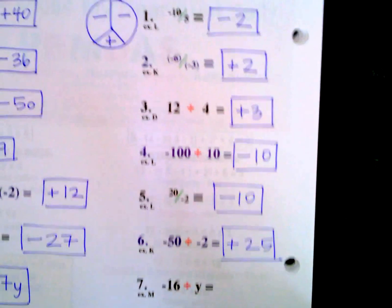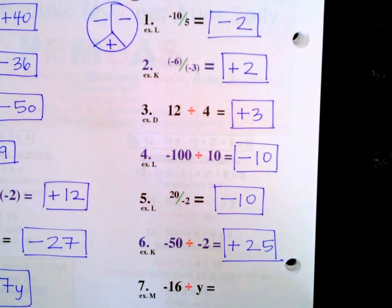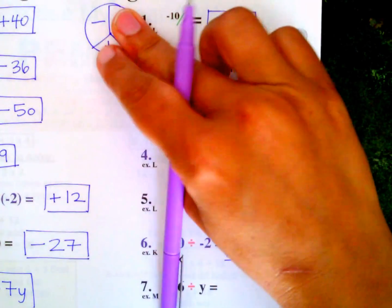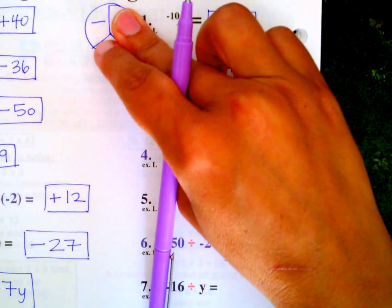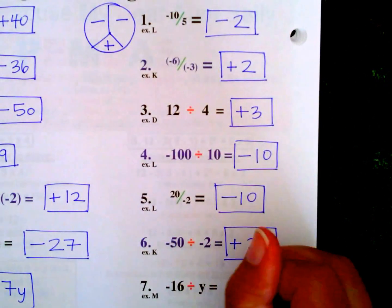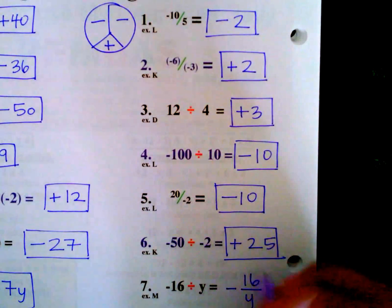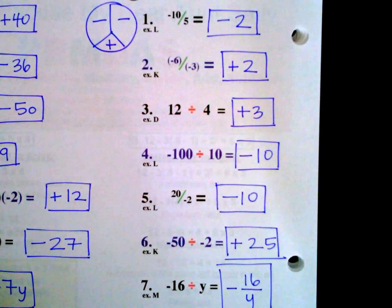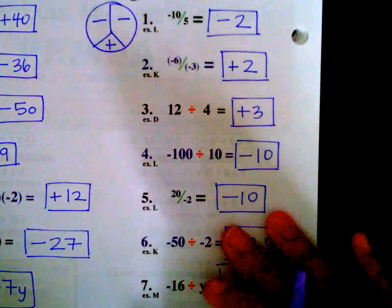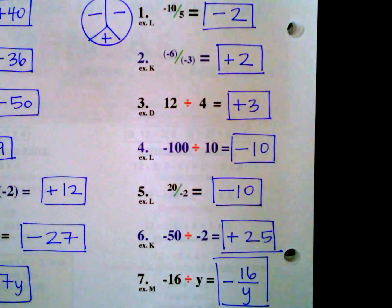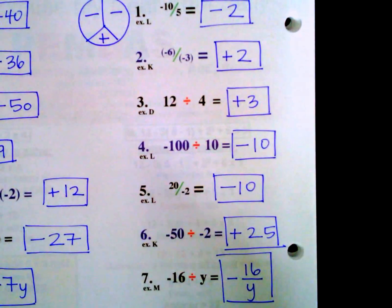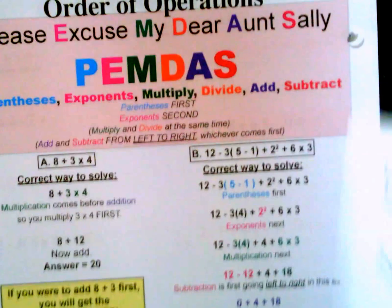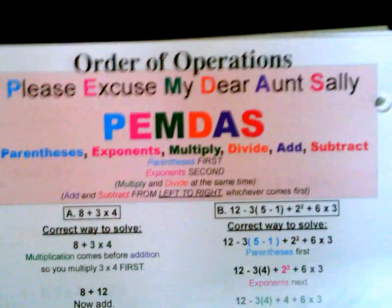Our last problem: negative 16 divided by positive y. Negative and positive makes negative, so we write it as negative 16 over y. We cannot simplify it further — we're just rewriting it. Stay tuned for our next video: page 10, order of operations.